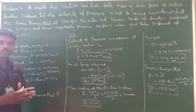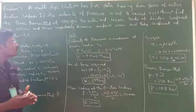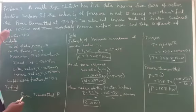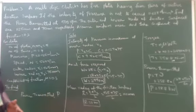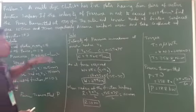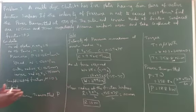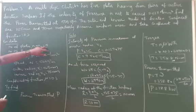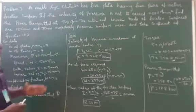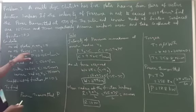First we need to understand the problem and write the given data. This is a multi-plate clutch problem. The total number of plates is given: N1 plus N2 equal to 5, that is 5 plates. They are having 4 pairs of active friction surfaces, so the number of friction pairs is 4.